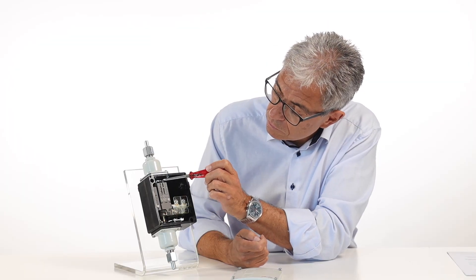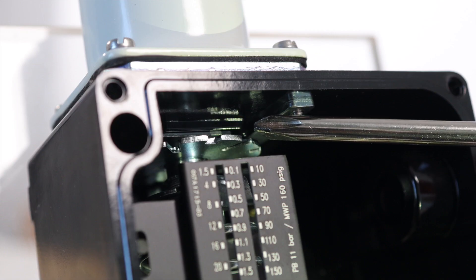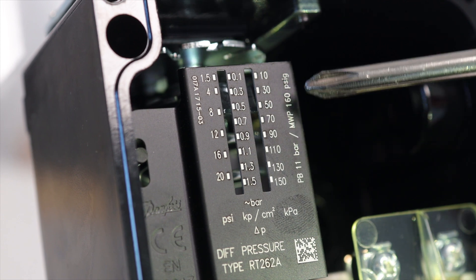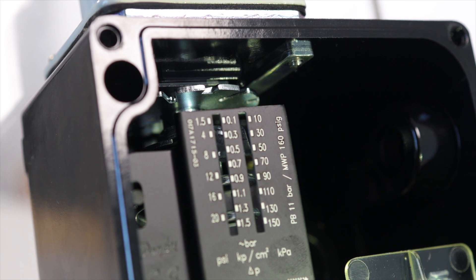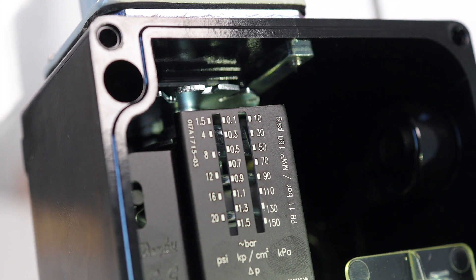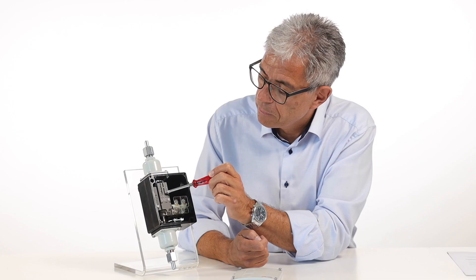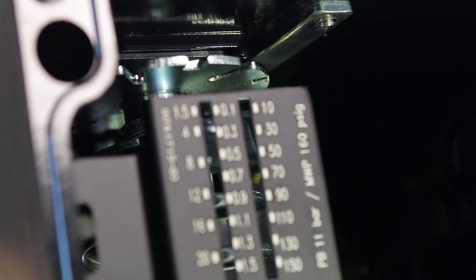Here, you can set the required differential pressure with the setting disk while at the same time read the scale. RT262A covers the range from 0.1 to 1.5 bar. In this example, we'll set the level to 0.5 bar.